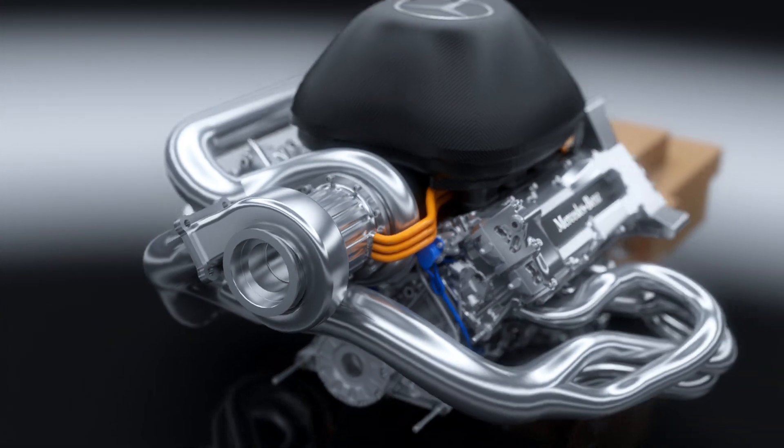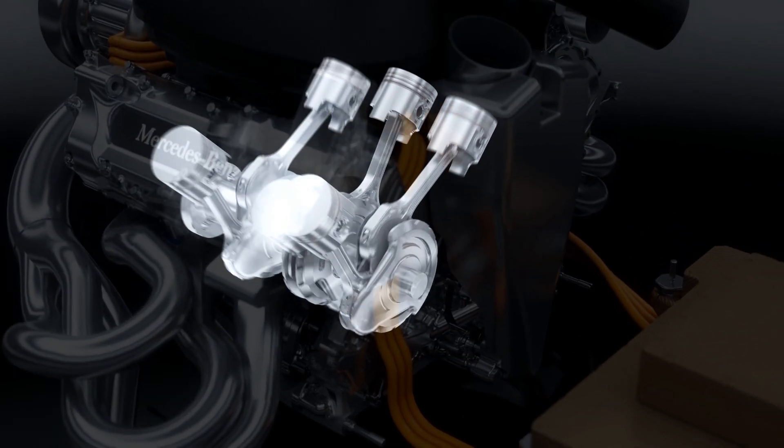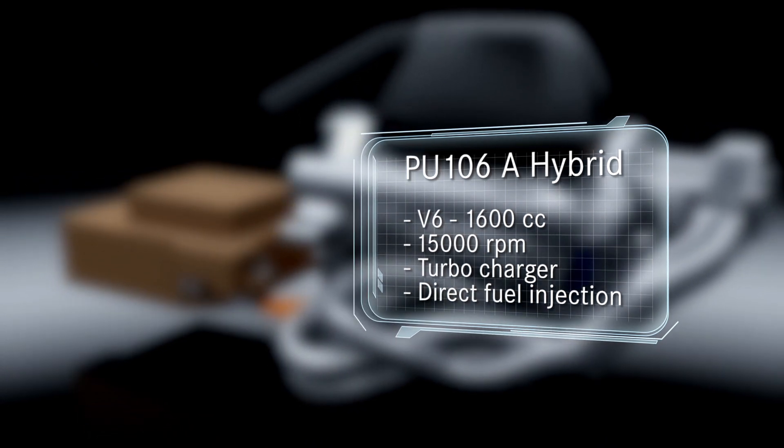The new engine regulations require downsizing from a 2.4 liter V8 to a 1.6 liter V6. Maximum revs have dropped from 18,000 RPM to 15,000.